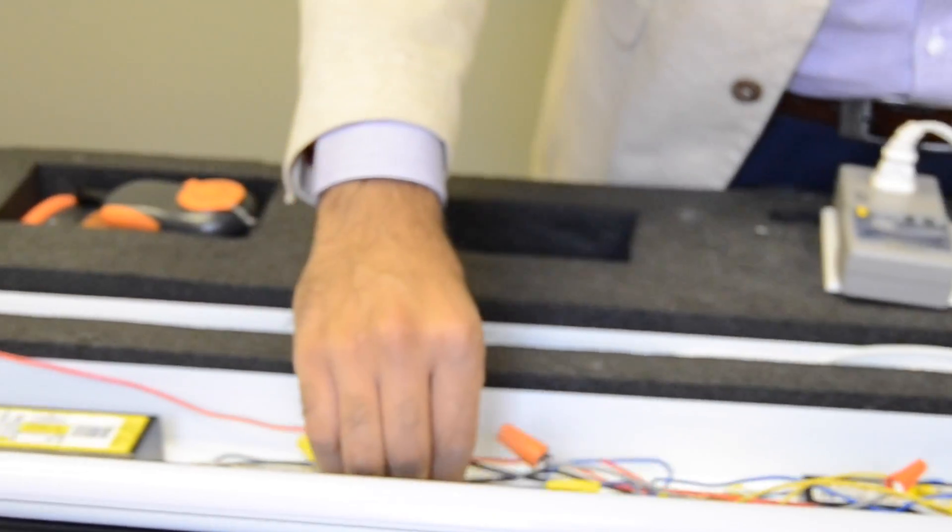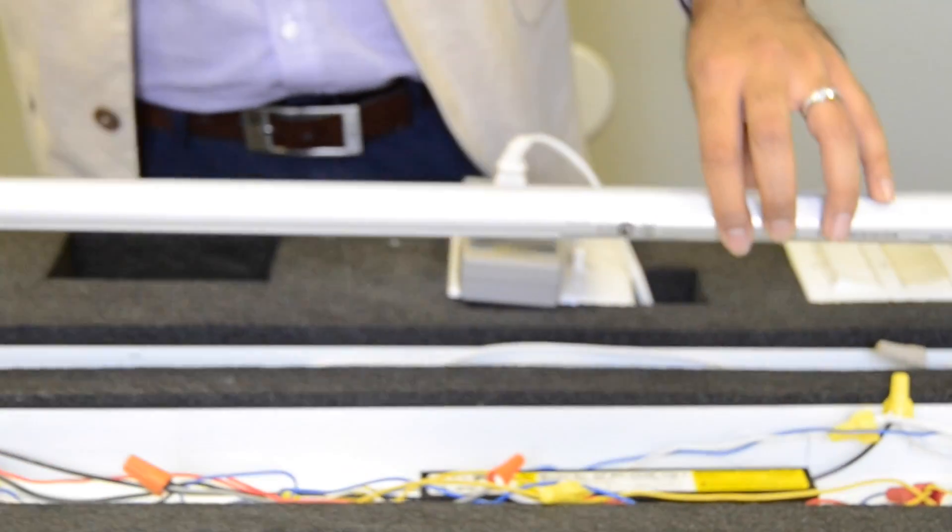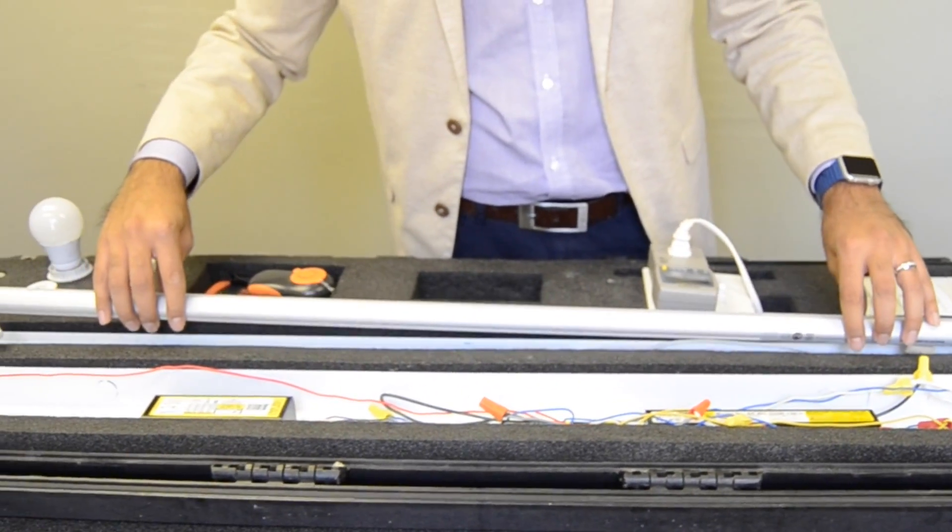Now we will take the same tube and apply it to all applications. The most common way to wire these tubes is to bypass the ballast. First we have single end wiring.